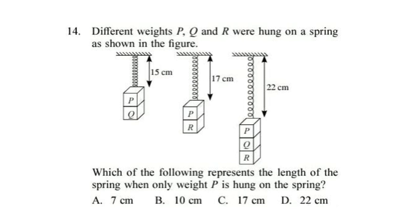Question 14. Different weights P, Q and R were hung on a spring as shown in the figure. Which of the following represents the length of the spring when only weight P is hung on the spring? Correct answer is option B. 10 centimeter.